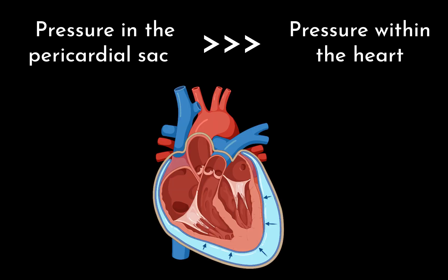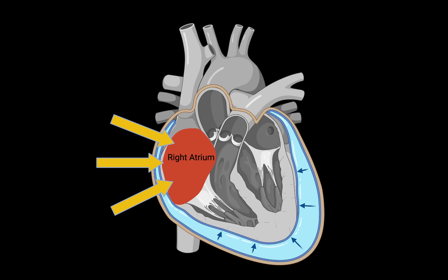Cardiac tamponade physiology occurs when the pressure within the pericardial sac is higher than the pressure within one or more of the cardiac chambers, resulting in impaired diastolic filling of that chamber. Classically, the right atrium is compromised first; however, it may be different in patients with heart defects or severe pulmonary hypertension.